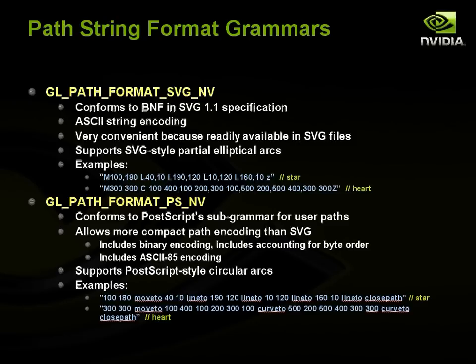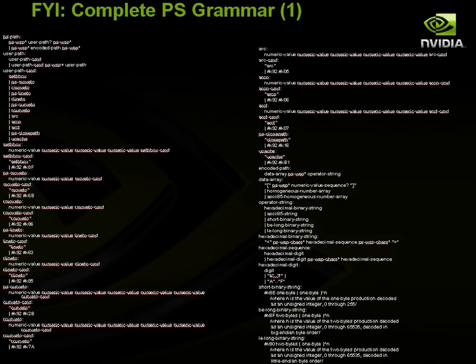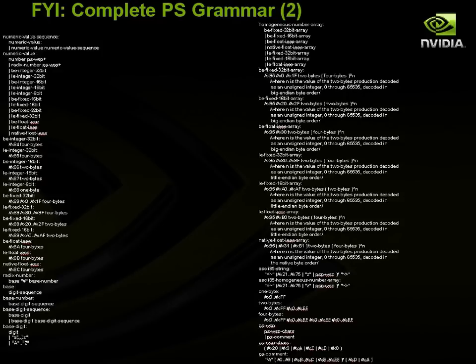You can specify paths from a string — probably the most convenient way — by calling glPathStringNV. There are two formats supported: one corresponds to the SVG grammar, and the other corresponds to the PostScript subgrammar for user paths, which uses a reverse Polish notation style of commands. The SVG grammar is copied directly from the SVG spec, confirming it conforms to a real standard. The PostScript grammar is a bit larger and supports binary specification of paths in a portable, compact way.